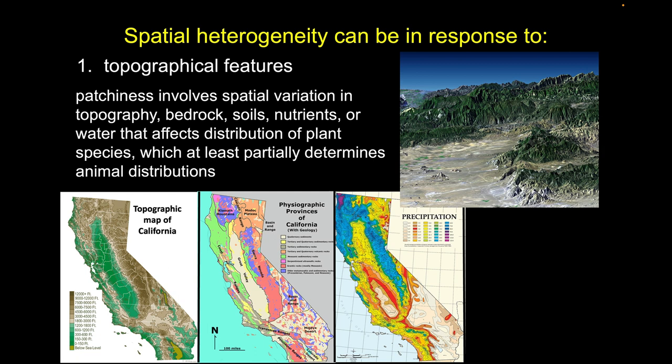The abiotic environment defines where organisms can possibly live. If we're talking about inside a volcano or deep under the earth, many organisms simply can't live there. So we first ask: what is the physical constraint, the abiotic constraint of this landscape? Once we pass through that lens, we can talk about others.